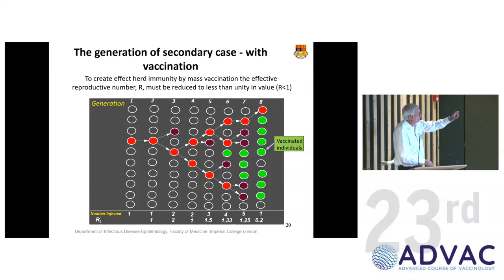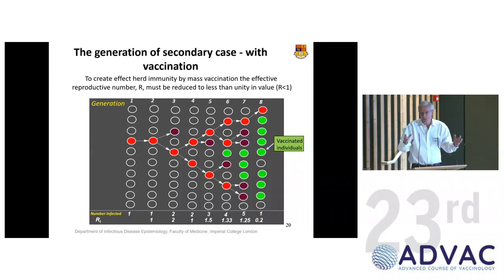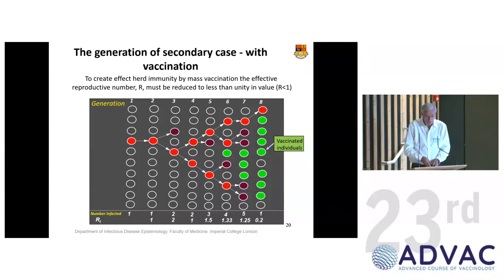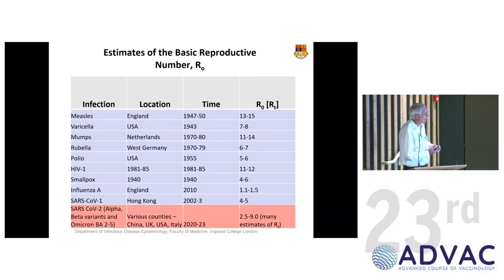When you start to vaccinate, you stop chains of transmission. It becomes obvious very quickly that there will be a level of vaccine uptake that takes R0 below unity. R0 estimates vary greatly — measles has very big R0 values prior to immunisation, whereas influenza A has an exceedingly low R0, which is good news, though its short generation time means when things happen, they happen quickly. For SARS, there's huge variance depending on the genetic strain.